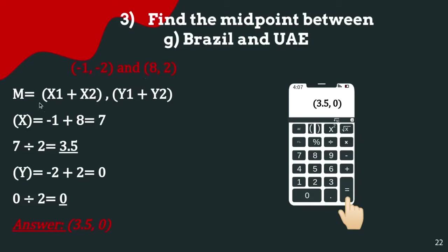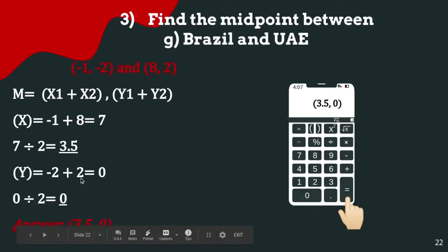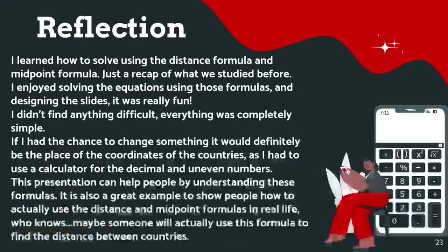Find the midpoint between Brazil (-1, -2) and UAE (8, 2). Using the midpoint formula: x = (-1 + 8)/2 = 7/2 = 3.5, and y = (-2 + 2)/2 = 0/2 = 0. The overall answer is (3.5, 0).